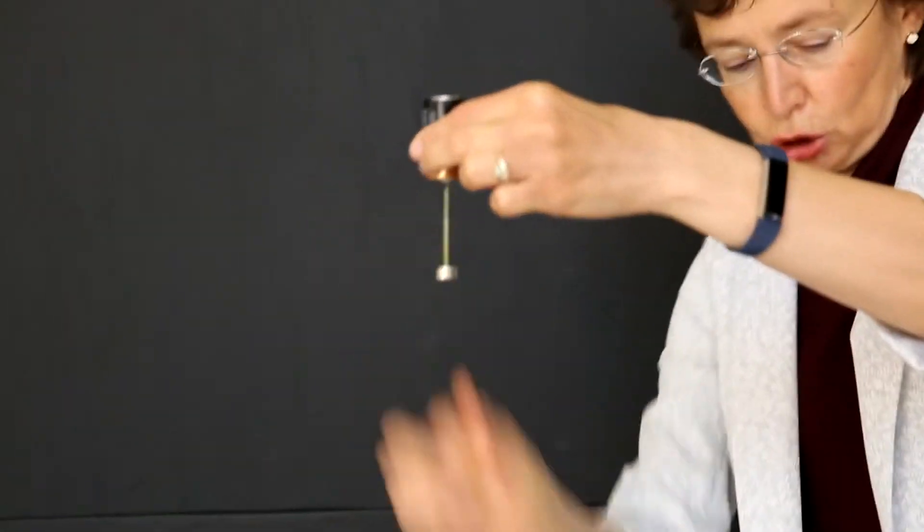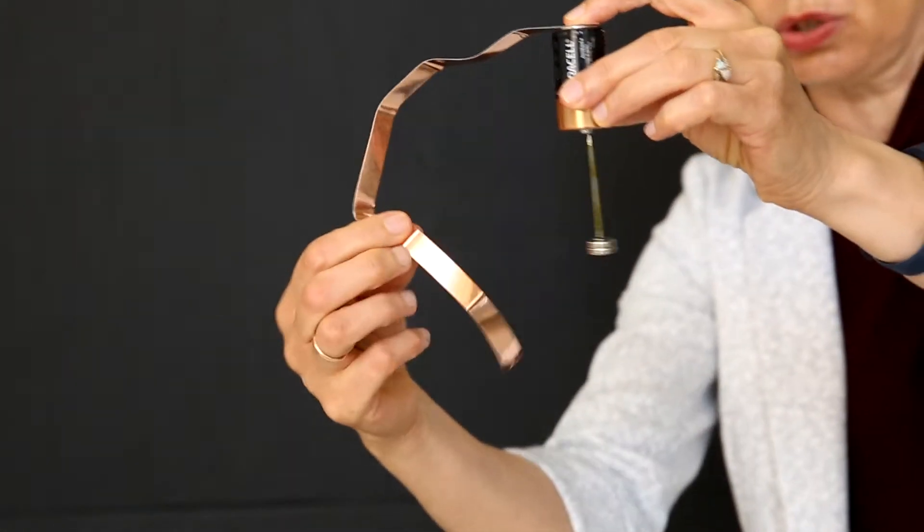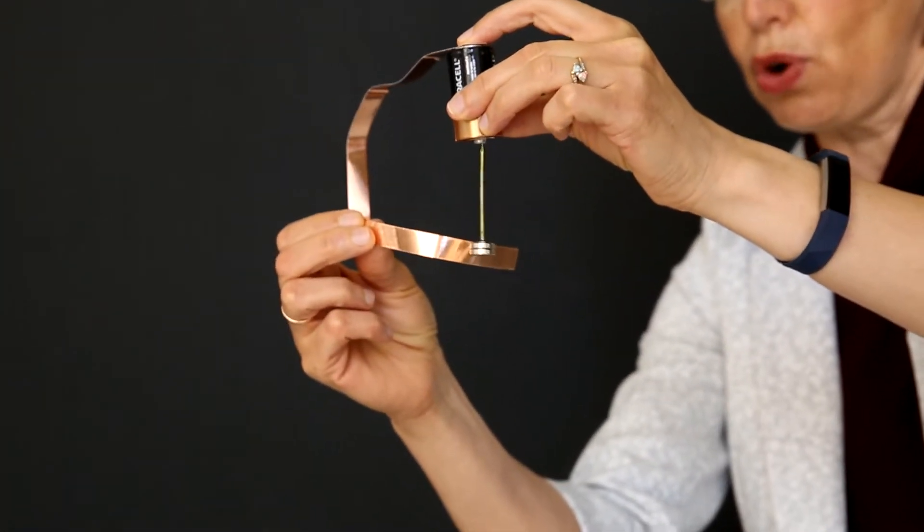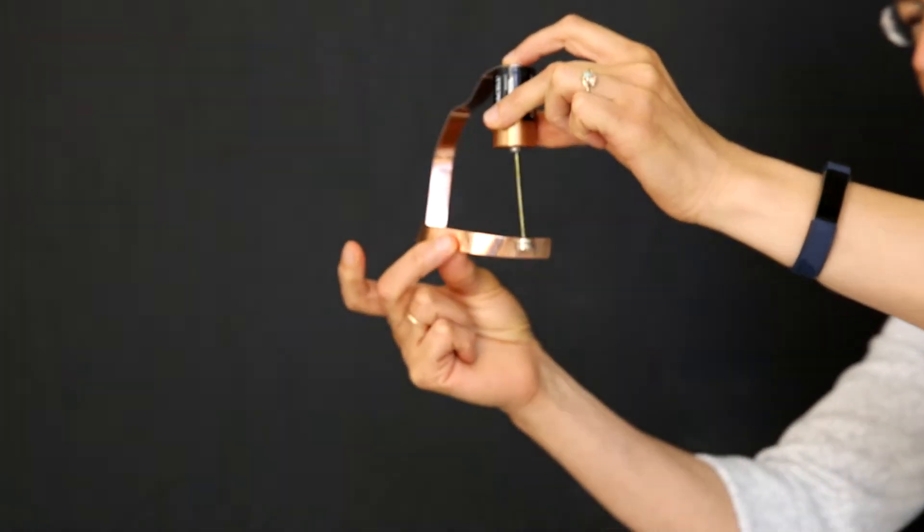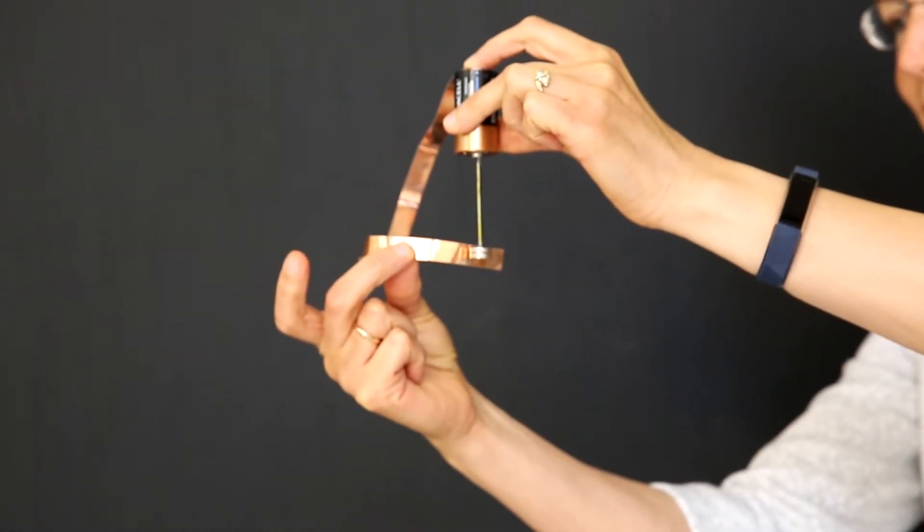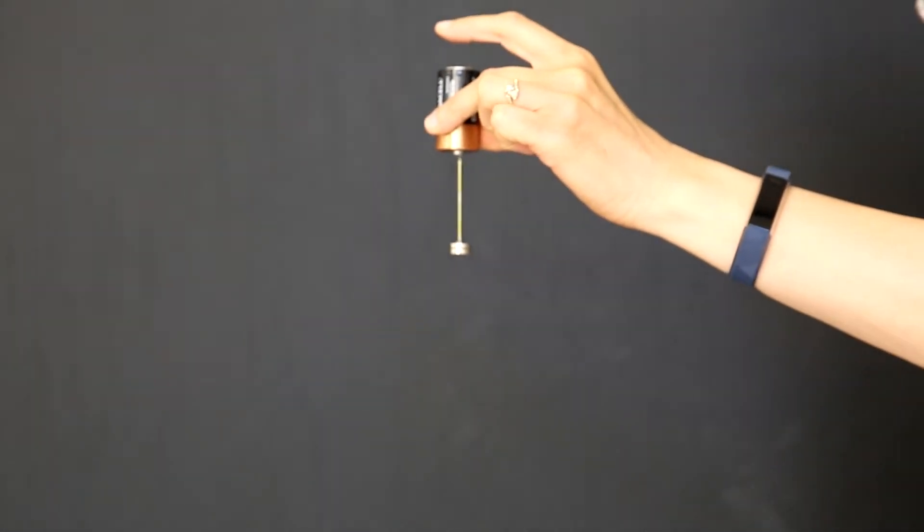And now you need to close the loop to let electrons flow. You close the loop with this copper foil strip, and you need to close the loop to a side. Watch. I bring it to a side, and the motor is working.